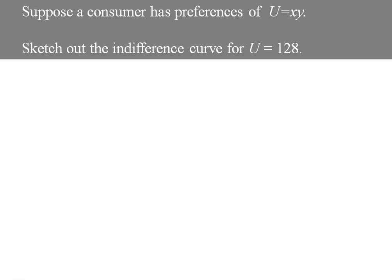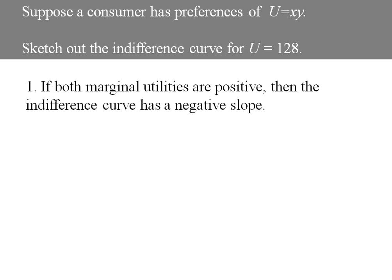The first thing we need to figure out is what kind of slope do our indifference curves have. Are they upward sloping or downward sloping? Well, if both marginal utilities are positive, then we know the indifference curve has a negative slope.